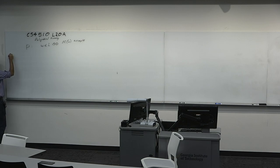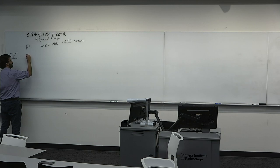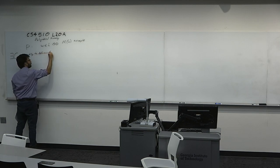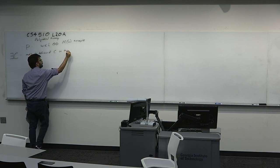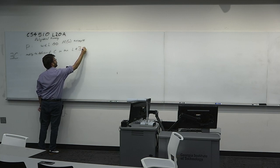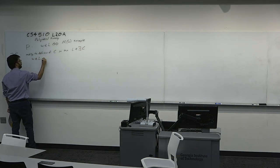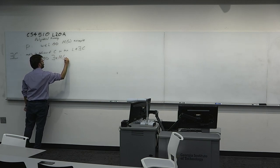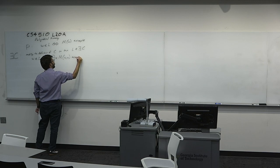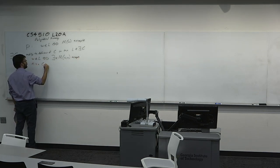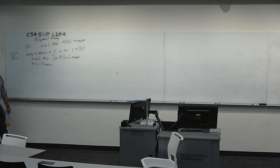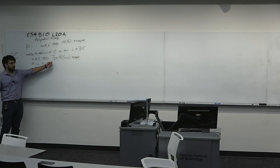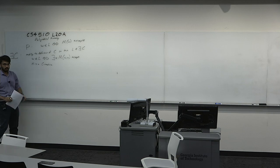We can define an existential operator. We put this existential quantifier to modify the definition of C, so that L is in exist-C if W is in L if and only if there exists X such that M on W, X accepts, and M is a C machine. So exist-C is we modify the definition of C so that it has to accept if there exists an X as well.